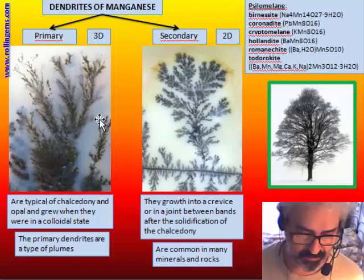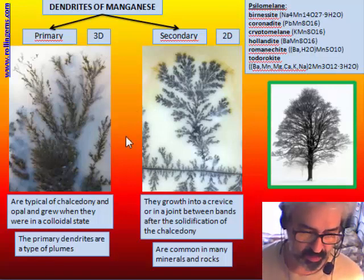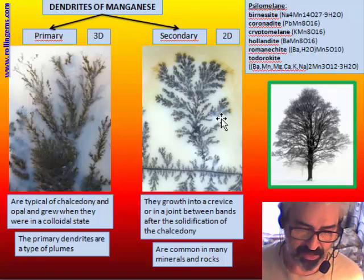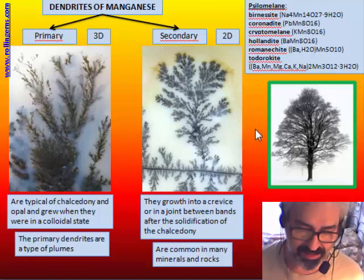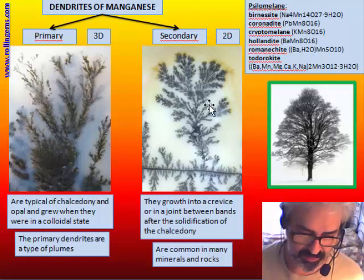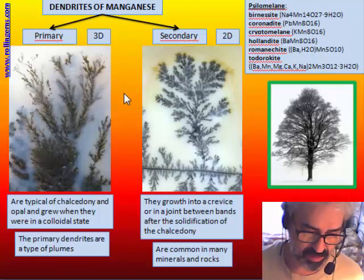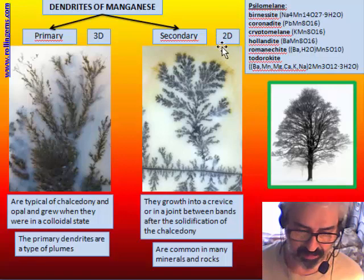Three-dimensional dendrites are trees that grow in a colloidal solution with a three-dimensional shape. Bidimensional dendrites grow in a crevice, in a fracture, in a very flat plane, and this is a process that occurs after the solidification of the chalcedony. We call the three-dimensional dendrites 'primary' and the two-dimensional ones 'secondary.'